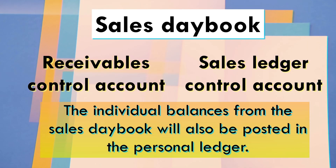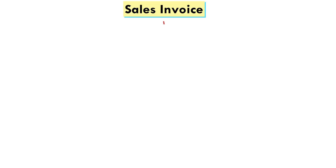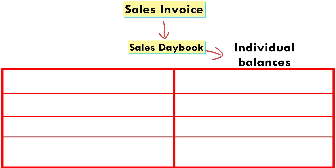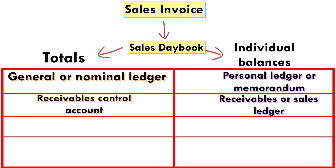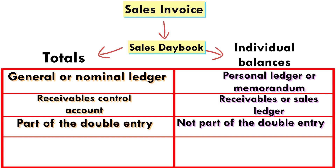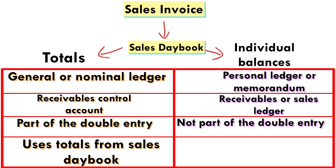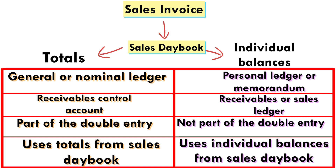A diagrammatic representation of this process starts from the source document called Sales Invoice, which is then extracted to the Sales Day Book. Individual balances will go to a personal ledger or memorandum, while the totals will go to the general or nominal ledger, which is called Receivables Control Account. The personal ledger is called Receivables or Sales Ledger. The general ledger is part of the double entry, while the personal ledger is not. The general ledger uses totals from the Sales Day Book, while the personal ledger uses individual balances.